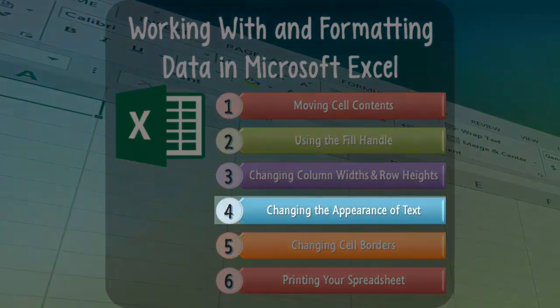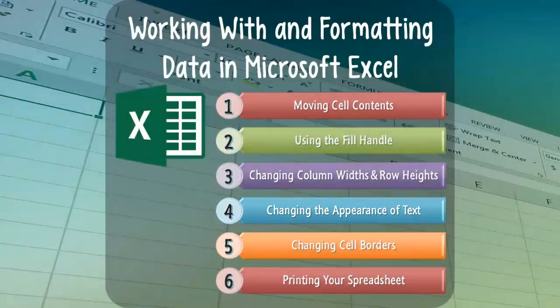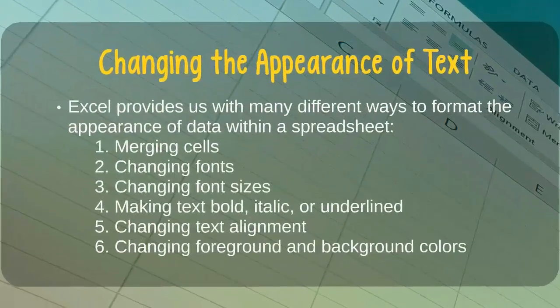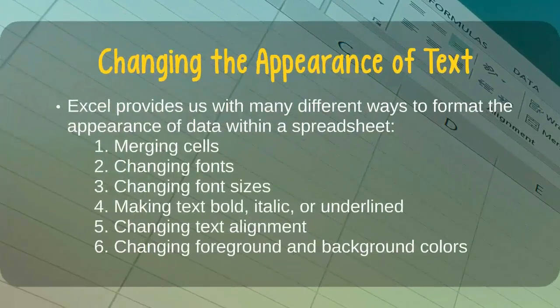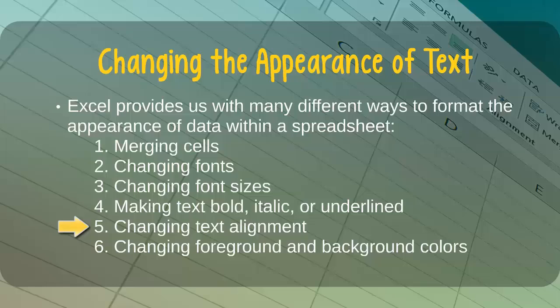Next, we'll learn about many ways in which we can change the appearance of text in an Excel spreadsheet. Excel provides us with many different ways to change the way that the text looks in our spreadsheets. Some of the commonest and most useful things we can do include merging cells, changing fonts, changing font sizes, making text bold, italic, or underlined, changing text alignment, and changing foreground and background colors.